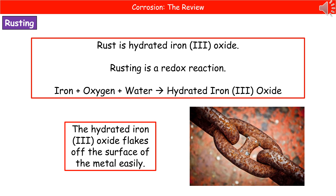The downside about objects that are undergoing this rusting process is that those hydrated iron 3 oxide areas are liable to flaking. So that means that once you've got one patch of rust, the bit that's rusted flakes off, which exposes the unreacted metal underneath to the oxygen and the water. It will then rust, and so on.